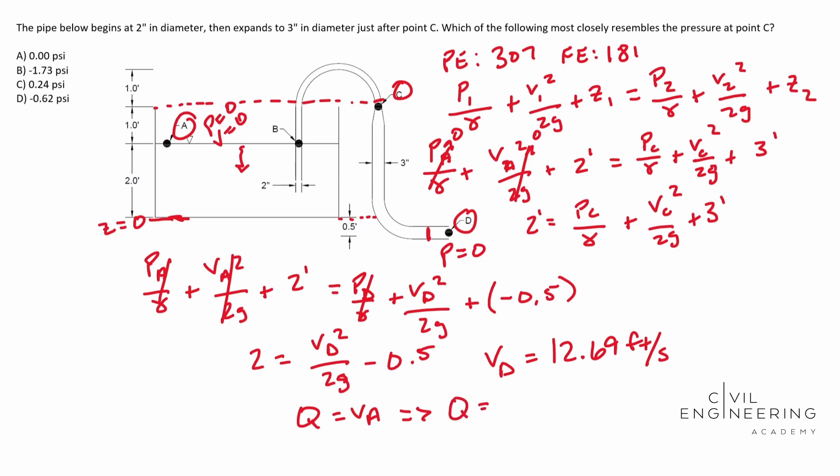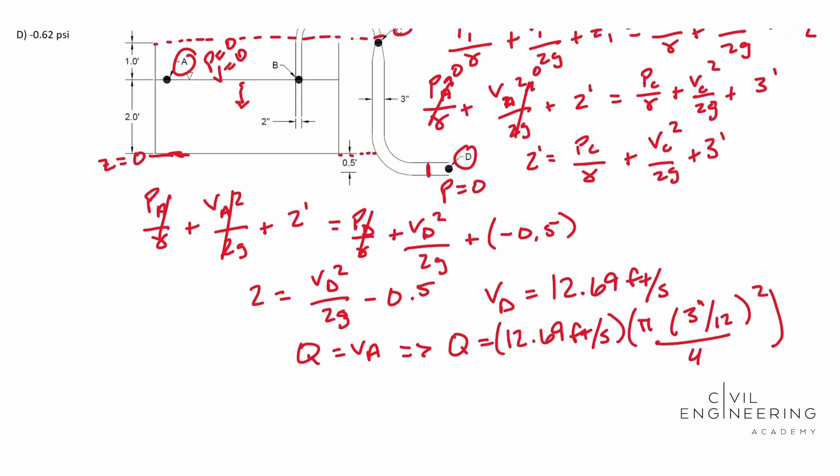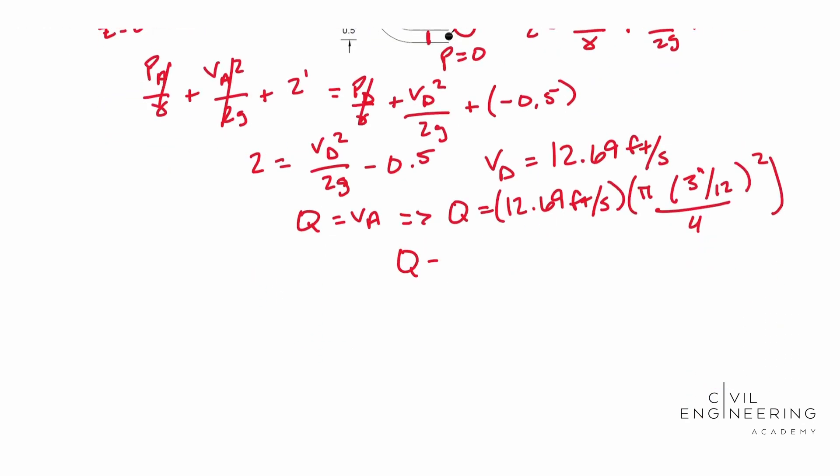Our flow rate is equal to that. 12.69 feet per second. And we're going to multiply that by our area, our cross-sectional area at point D. So we know it's three inches in diameter. We're going to use pi D squared because it's easier that way. Three inches, converted over to feet, divided by 12, pi D squared over four. And so our Q, let me scroll down here. Our Q ends up being 0.62 cubic feet per second.